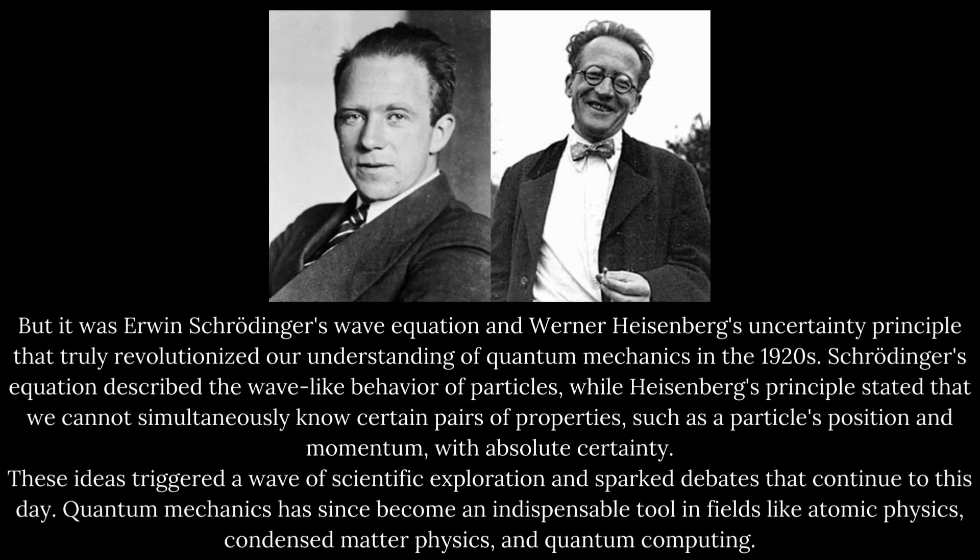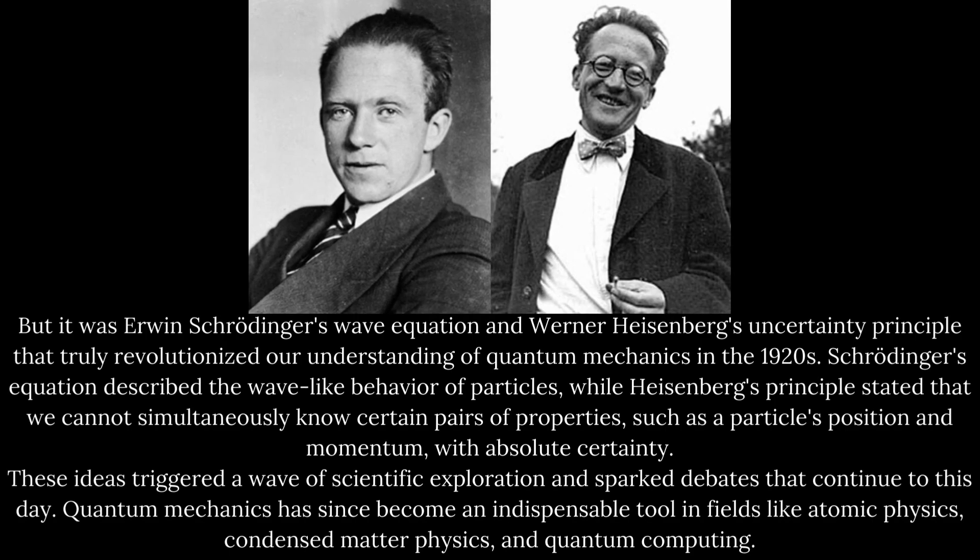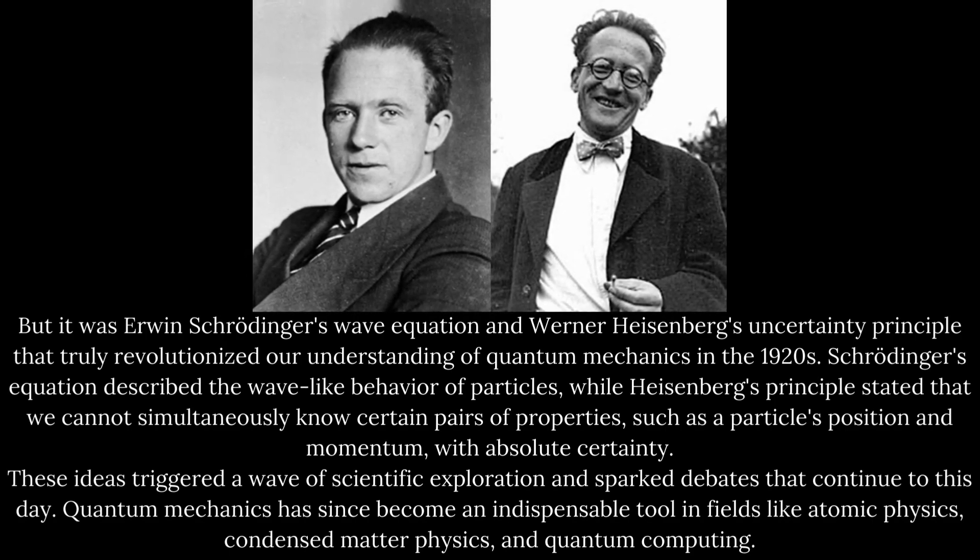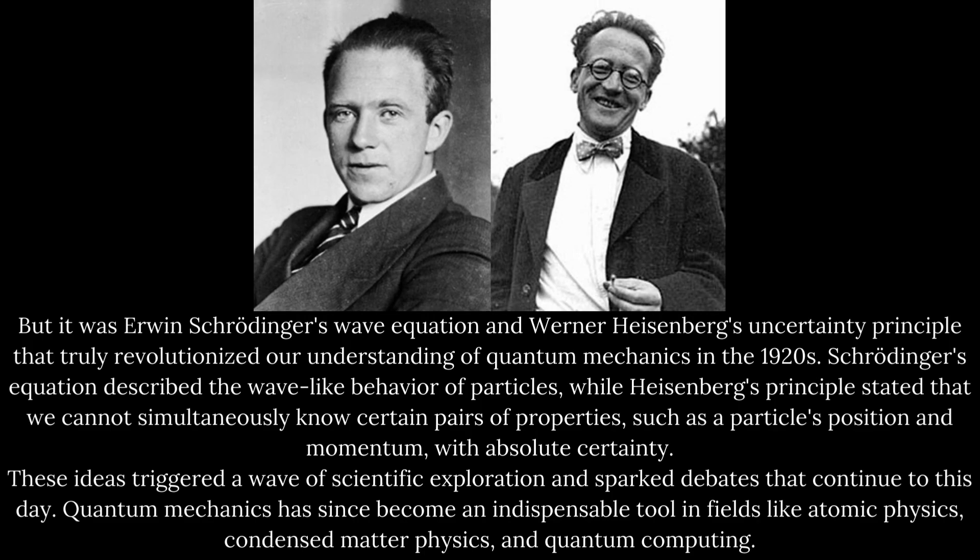But it was Erwin Schrödinger's wave equation and Werner Heisenberg's uncertainty principle that truly revolutionized our understanding of quantum mechanics in the 1920s. Schrödinger's equation described the wave-like behavior of particles, while Heisenberg's principle stated that we cannot simultaneously know certain pairs of properties, such as a particle's position and momentum, with absolute certainty.